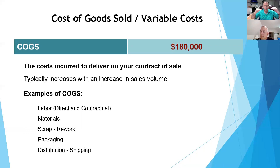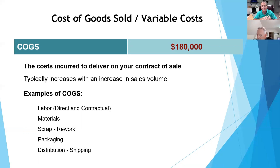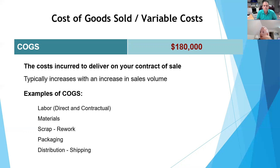So everything falls into one of those three categories. Direct expenses like shipping costs are variable — it's based on how much product you ship. Raw materials, how much that costs, packaging, how much it costs to wrap it up and send it out — those are all variable costs because they all depend on how much you sell.